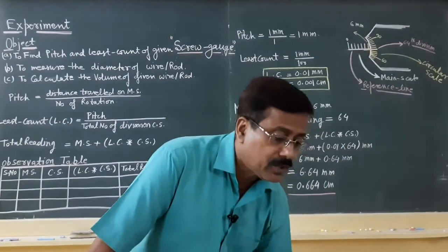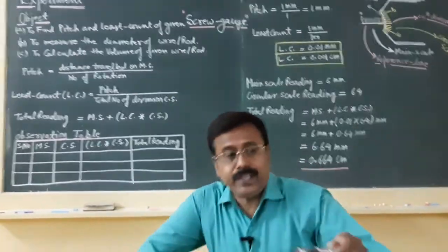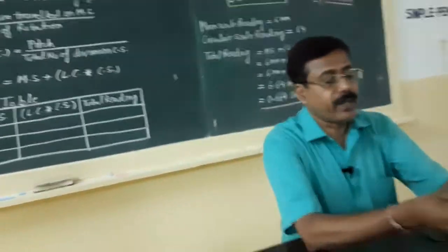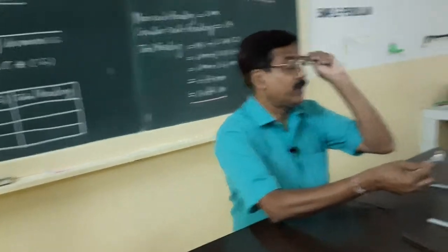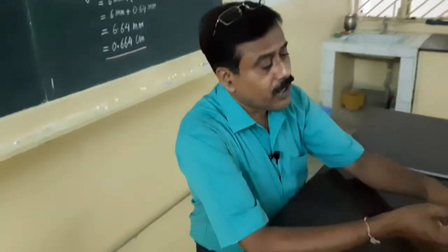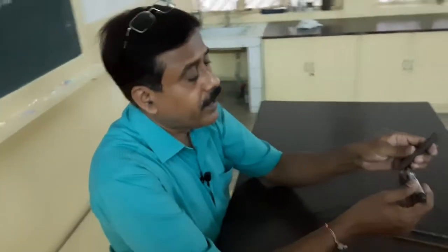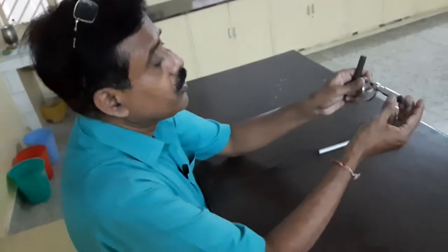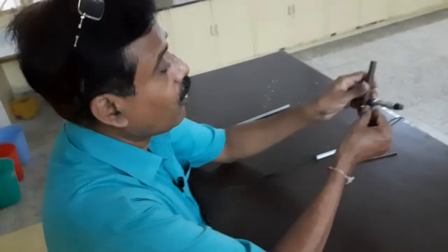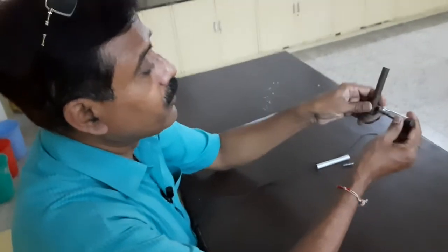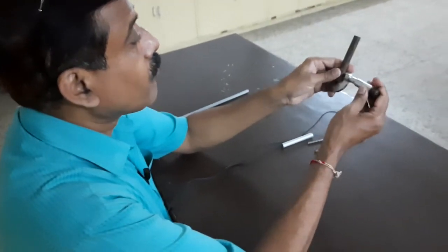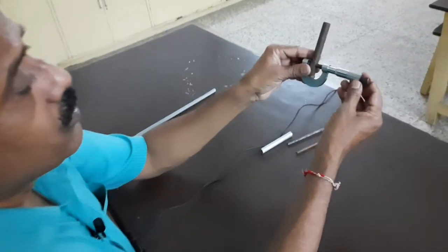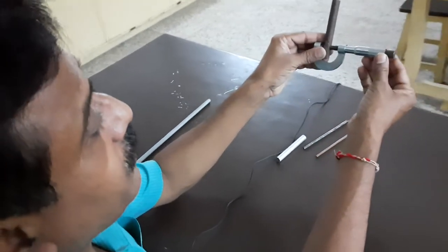Now let's see how we use the screw gauge to measure it practically. This is the screw gauge. Suppose you are going to measure the diameter of this thick rod — what you have to do is fix the rod between the jaws of the screw gauge like this.